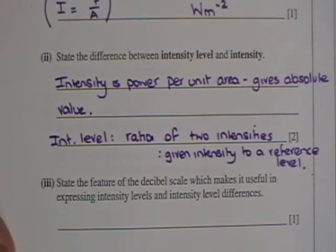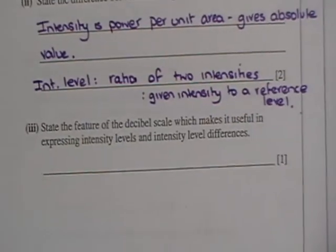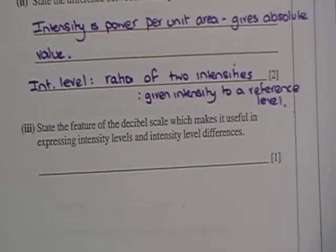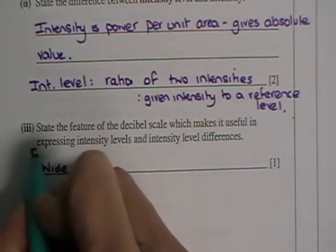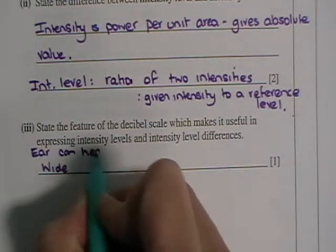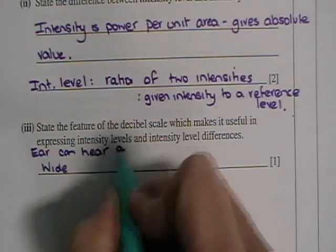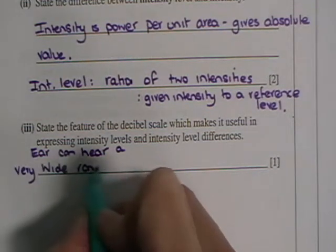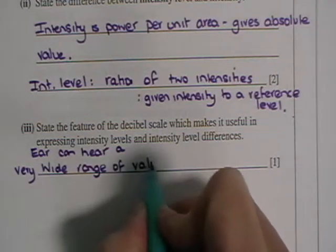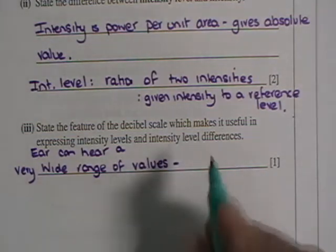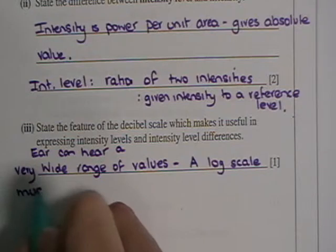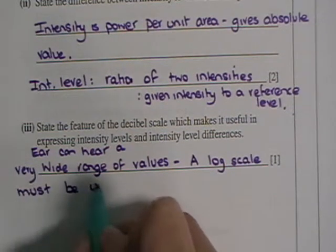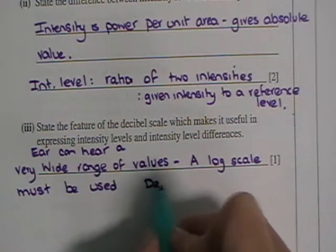State the feature of the decibel scale which makes it useful in expressing intensity levels and intensity level differences. And the reason is because there is such a wide range of values. The ear can hear a very wide range of values, and therefore a log scale must be used. And the decibel scale is a log scale.